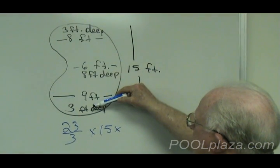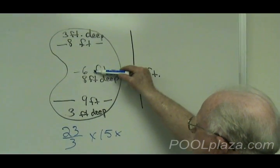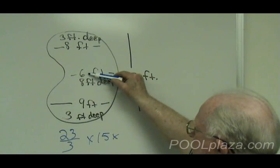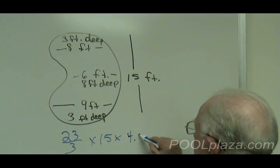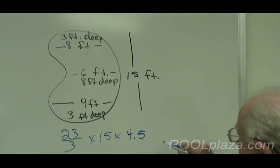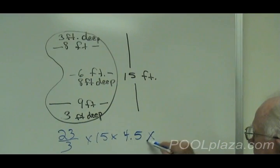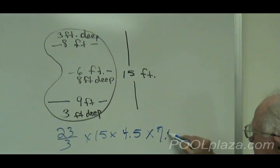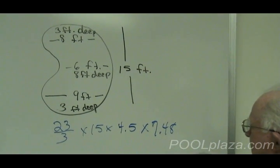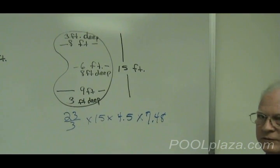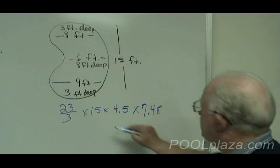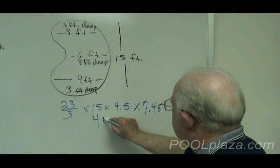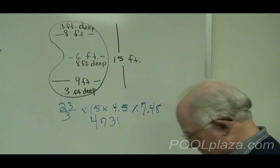The average depth, 3 feet minimum, 6 feet, 3 plus 6 is 9, equals 4.5 feet for average depth. And then 7.48 for an irregular or freeform pool. And this pool is 4,731 gallons.